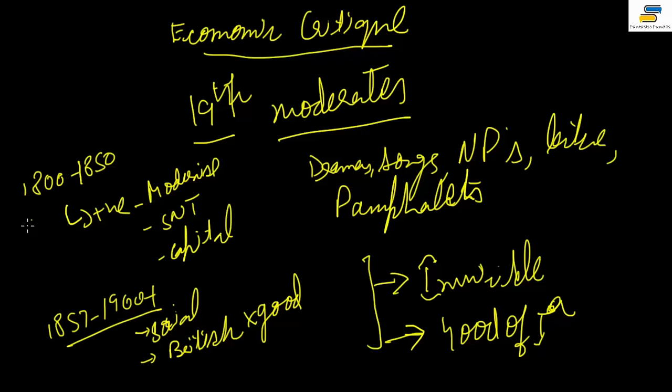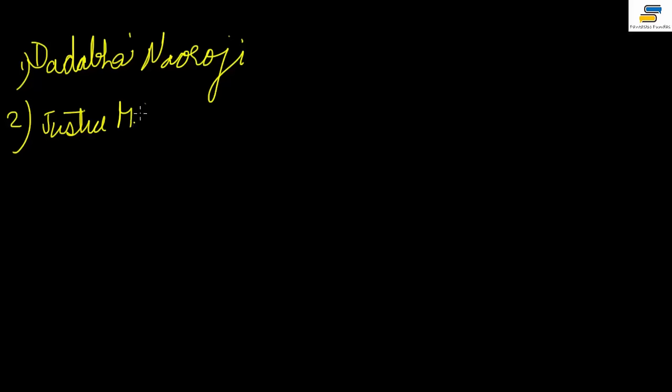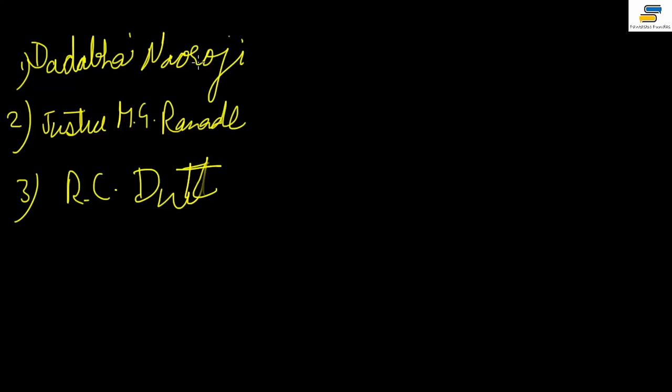After people realized that Britishers could be defeated, three names stand out in the economic critique of British rule. Number one is Dadabhai Naoroji. Number two is Justice Mahadev Govind Ranade — M.G. Ranade. Number three is R.C. Dutt — Romesh Chandra Dutt.